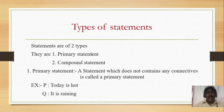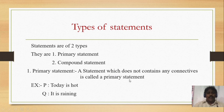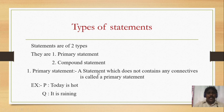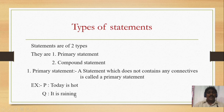Now, types of statements. There are two types: number one is primary statement, and number two is compound statement. A primary statement is a statement that does not contain any connectives. Connectives are words like 'and,' 'or,' 'if-then,' and 'if and only if.' For example, 'Today is hot' and 'It is raining' — these two statements have no connectives, so they are primary statements.